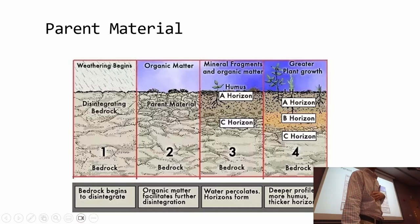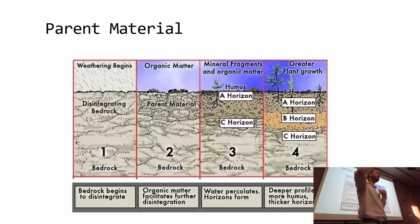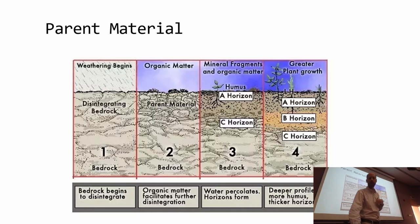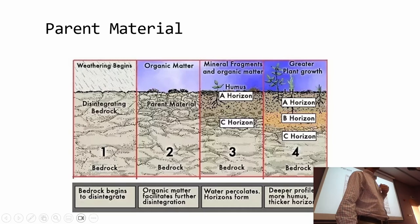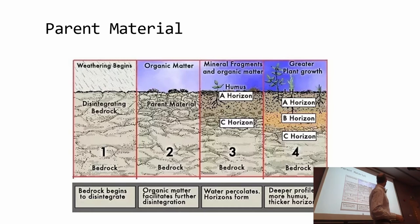The B horizon develops when you have mature soils. It's a layer where there is deposition of some materials. When you see a B horizon — that accumulation layer in the soil — it is already a symptom that your soils are becoming mature over time.